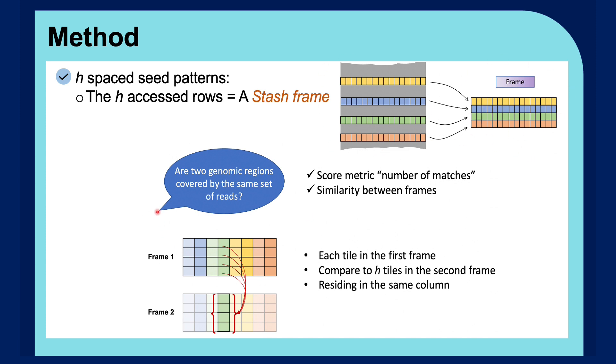In order to answer the question of whether two genomic regions are covered by the same set of reads, we define a score metric called the number of matches, which captures the similarity between any two frames of interest. It's calculated such that each tile in the first frame is compared to each tiles in the second frame residing in the same column. The number of matches is incremented if there is at least one equal value to the examining tile in the corresponding column of frame 2.